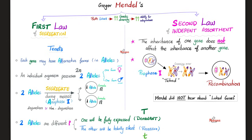The second law is the law of independent assortment. What does that mean? The inheritance of one gene is independent — not affected by the inheritance of the other gene. Why not? Because it depends: if you are here, you will cross, but if you are out here, you will not cross. There is no way to know whether two genes will cross with each other or get separated. Which means the inheritance of one gene is not affected by the inheritance of the other gene, because we have no idea who is going to cross over and who will not.